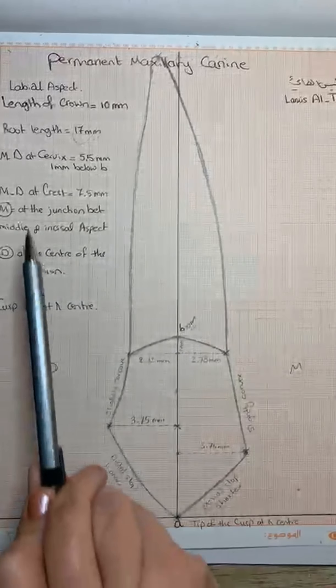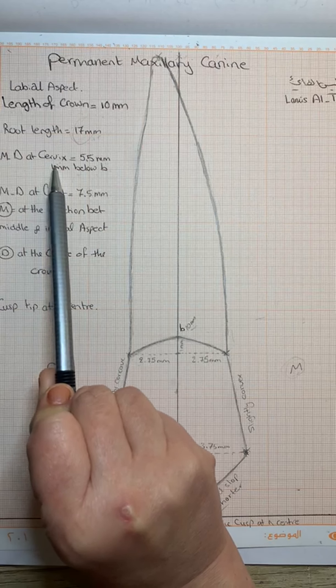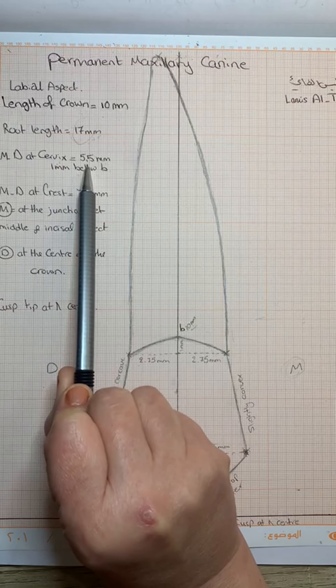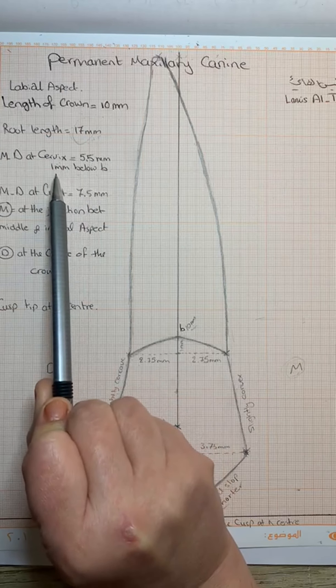The first measurement is the mesiodistal dimension of the cervix. So we have the cervical line, which is equal to 5.5 mm. The level will be 1 mm below B. So from B, we are moving downward, and here, at this point...